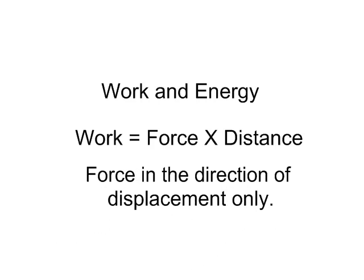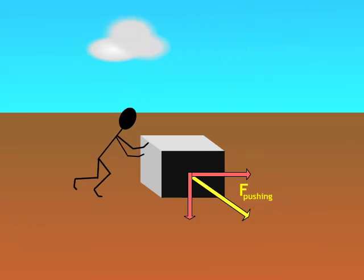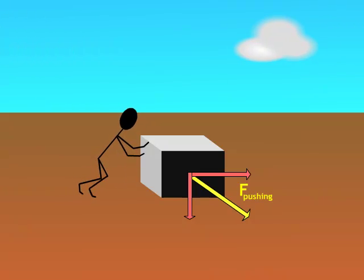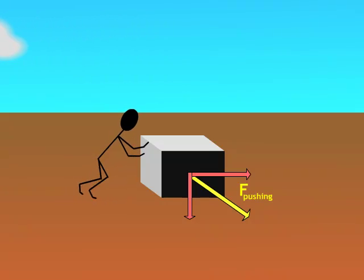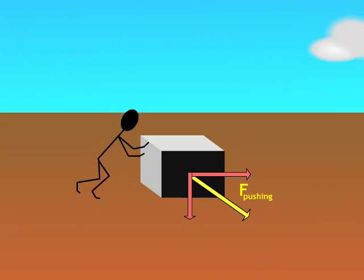The reason we only count force in the direction of displacement is because work has to result in energy, in joules. So if we look at our poor guy pushing this crate, it's only the work that's resulting in any energy being produced. Obviously he's accelerated the crate and given it some kinetic energy. Now that he's at constant motion, probably the energy being produced is in the form of heat energy, in the form of friction.